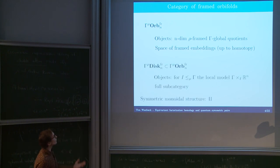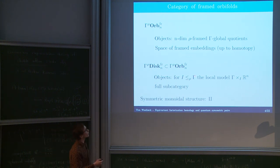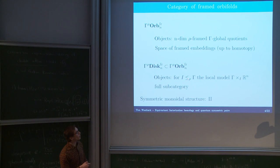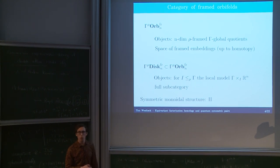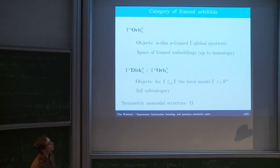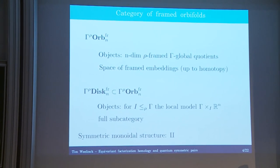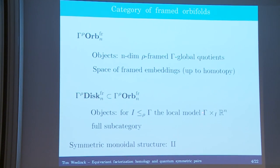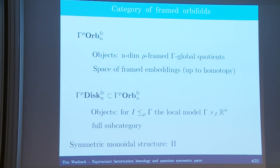The local pieces form a full subcategory of disks. These disks all look as follows: we take some subgroup of the finite group which receives a faithful action on rho, and consider the quotient — we take gamma and R^n and mod out the diagonal I action. This is just the number of cosets of I in gamma copies of R^n, and it naturally has one of these rho-frame structures. We think of global quotients as glued from these, with a symmetric monoidal structure given by disjoint union.